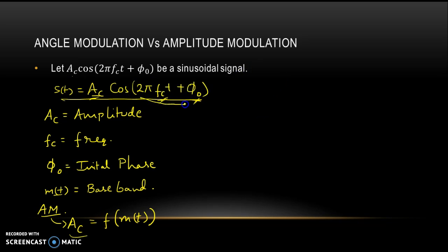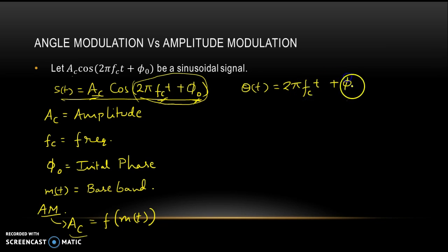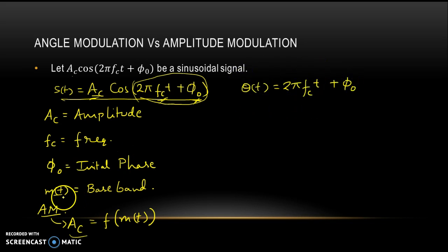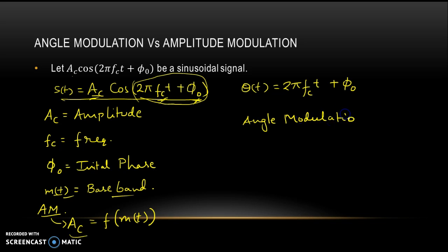Now this inner part inside the cosine — that is the angle — is a function of time: 2π·fc·t + φ. If I modify this angle with the baseband signal, I will call it angle modulation. So angle modulation is basically the modification of the angle inside this cosine. When this angle gets modified with the baseband signal, we call it angle modulation.